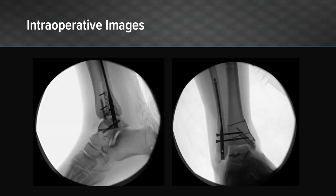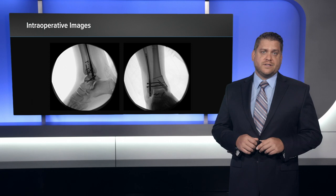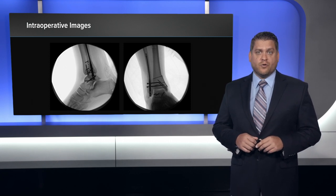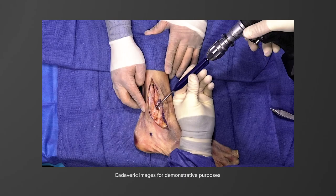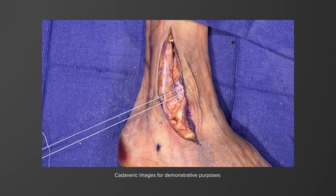After all bony fixation was complete with repair of our medial and lateral osteotomies, attention was turned to repair of the soft tissues. The AITFL was taken down to perform the osteotomy of the fibula and was repaired with fiber tack suture anchors for direct tendon-to-bone repair of those anterior ligament structures.